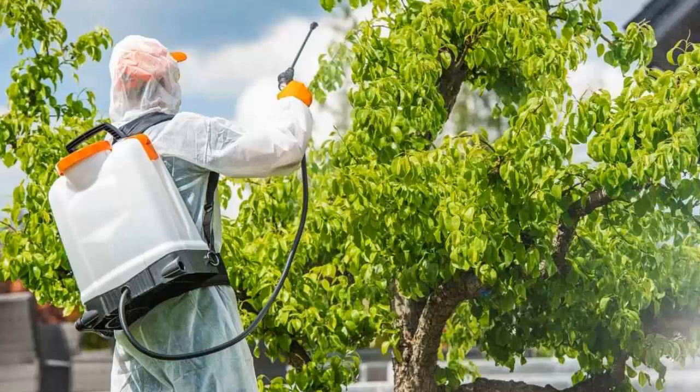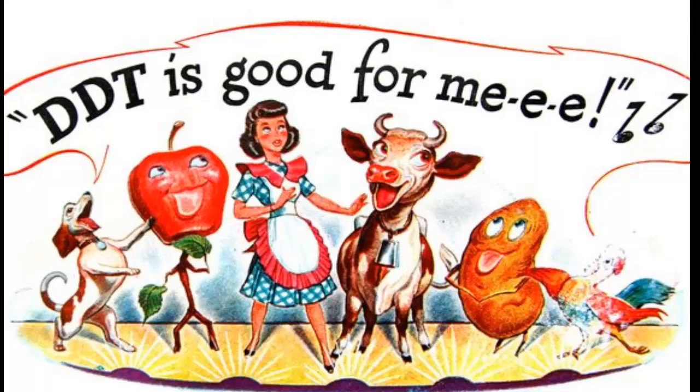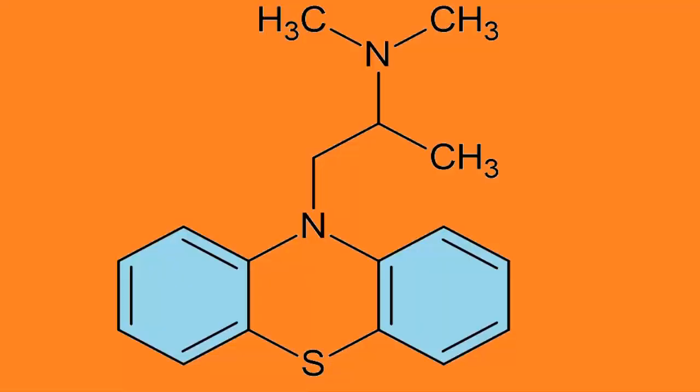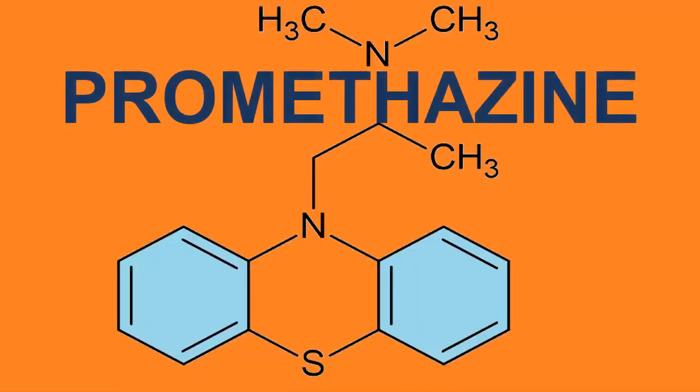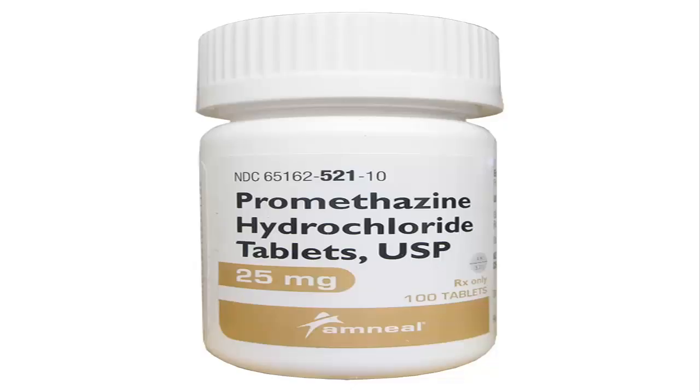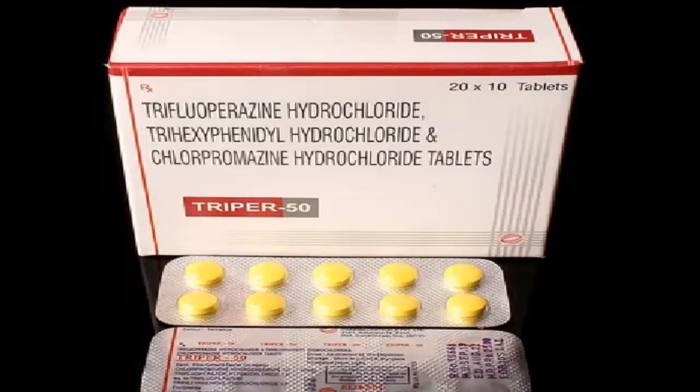Phenothiazine were used as insecticides up to the onset of DDT. The most famous derivatives of phenothiazine are promethazine, which is used in pharmacology as an antihistamine and antipsychotic, and chlorpromazine, a very powerful sedative.